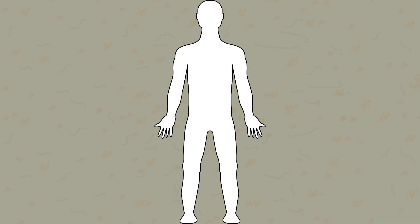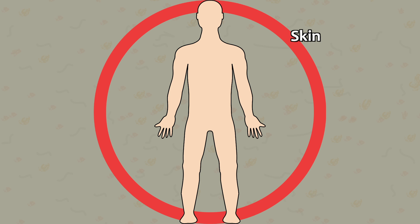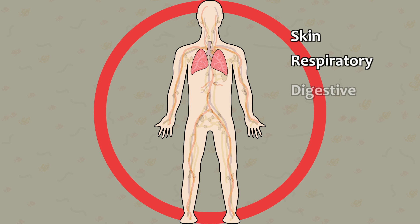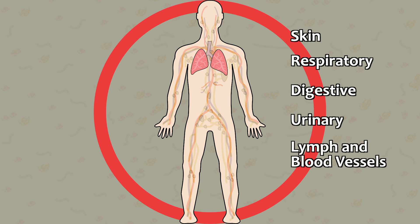which is found throughout the body, close to areas exposed to the outside world. They live under the skin, in the respiratory system, in the digestive tract, urinary tract, and they live near lymph and blood vessels.